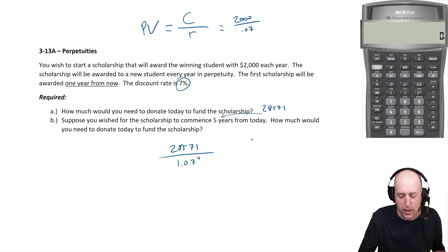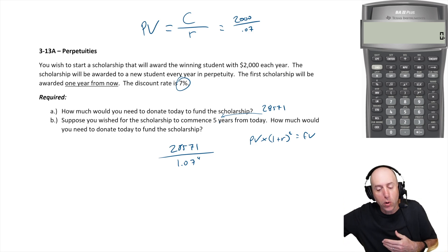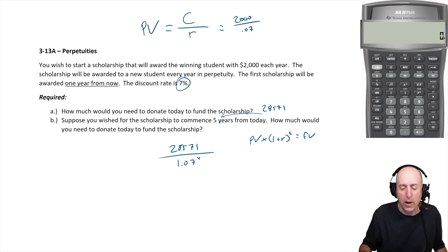So, you know this formula, right? PV times one plus r to the t equals FV. Well, we know our FV. We want 28,571 to be in place four years from now, not five, because again it's got to grow by 2000 to pay the scholarship at the end of the year.